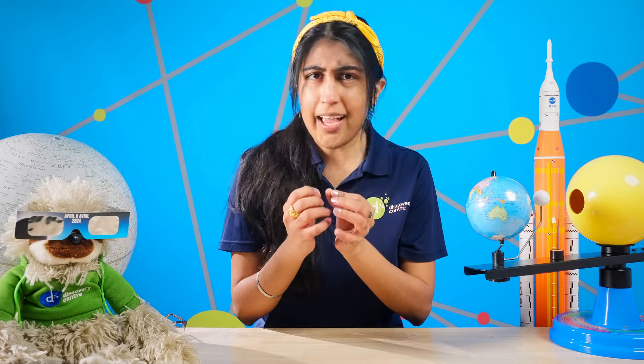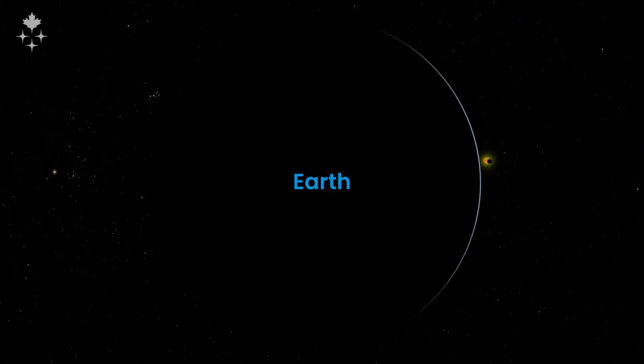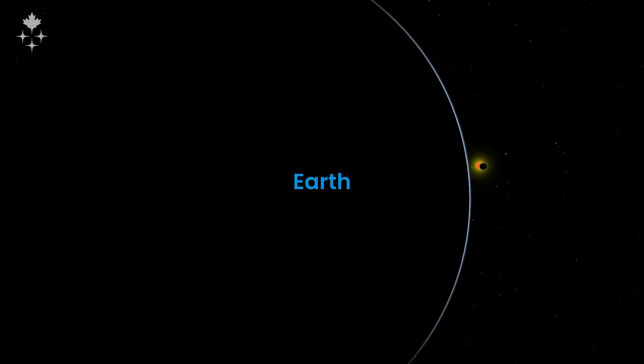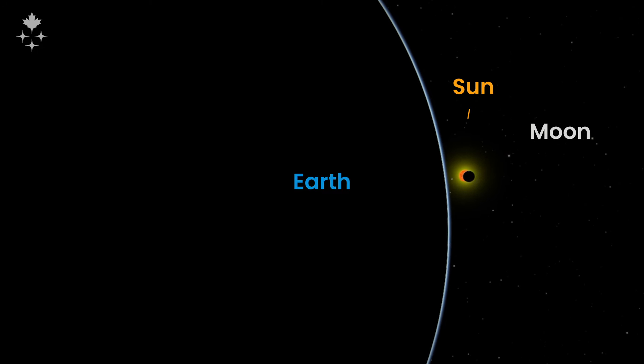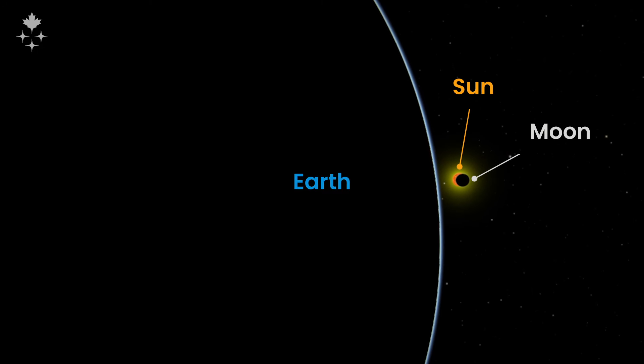The universe is in motion, from the tiniest electrons to spinning galaxies. In our solar system, the Earth orbits around the Sun while the Moon orbits around the Earth. An eclipse occurs when the Earth or the Moon passes in front of the Sun, blocking some of its light.